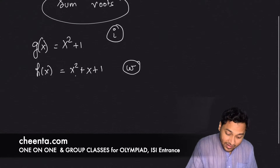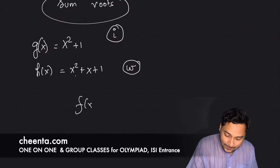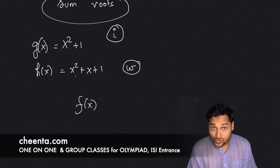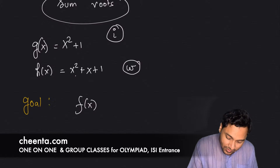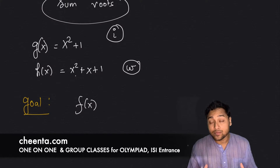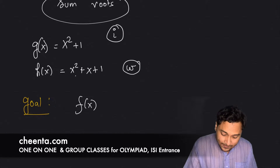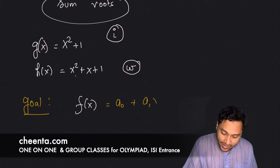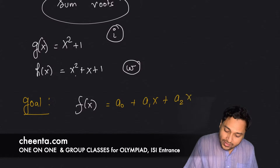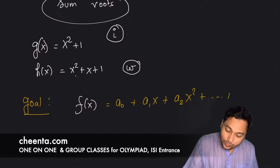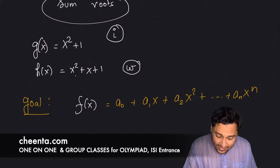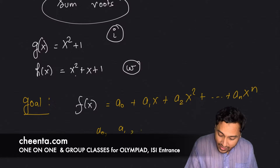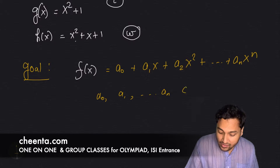So how do we construct that final polynomial f(x) with integer coefficients? This is our goal: construct a final polynomial f(x) with integer coefficients, written as a₀ + a₁x + a₂x² up to aₙxⁿ.